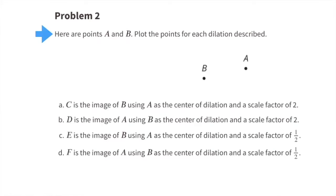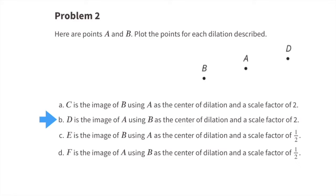Number 2. Here are points A and B. Plot the points for each dilation described. Part A: C is the image of B using A as the center of dilation and a scale factor of 2. Start with A, head towards B, and since the scale factor is 2, move beyond B one entire length. This is where you plot the point for C. Part B: D is the image of A using B as the center of dilation and a scale factor of 2. Start at B, head towards A, and move past A one full unit. This is where you plot the point for D.